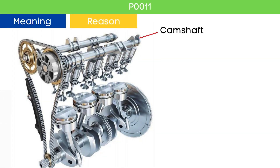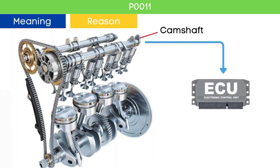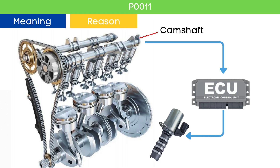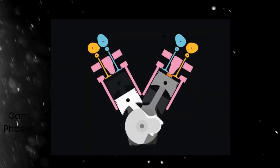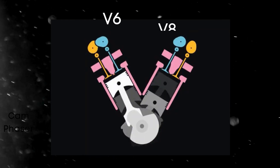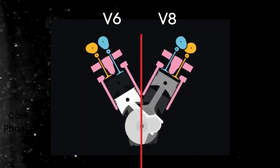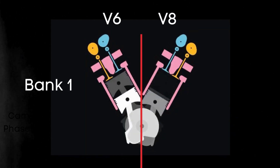The camshaft position sensor measures the position of the camshaft and sends this signal to the ECU. The ECU then sends a pulse command to the variable valve timing VVT solenoid to advance or delay the cam position based on the engine load and speed. The VVT solenoid adjusts the cam phaser accordingly. In the case of V6 or V8 engines, there are two camshafts.